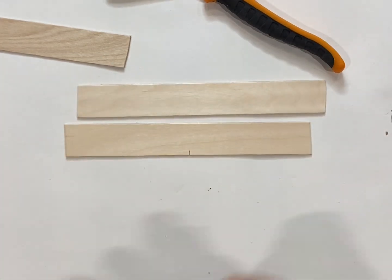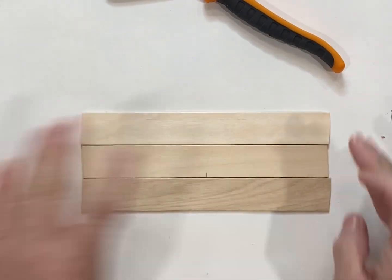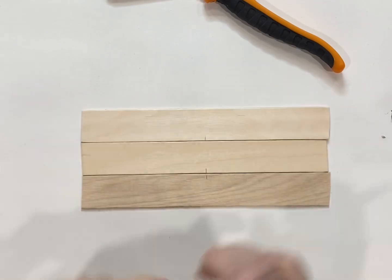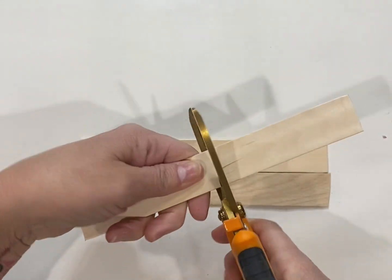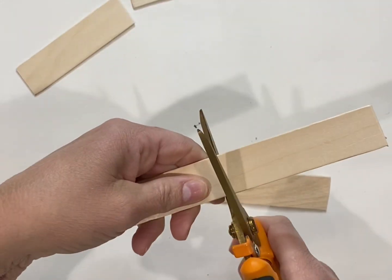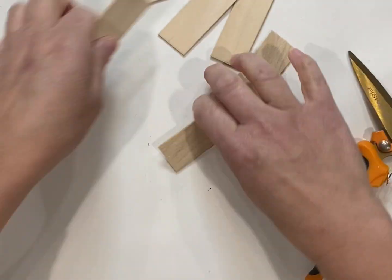I'm gonna find the center and cut them in half. You can do this with any size craft sticks, just find the center. Then I'm gonna cut these in half with my snips. You can use regular scissors—they cut pretty easy.